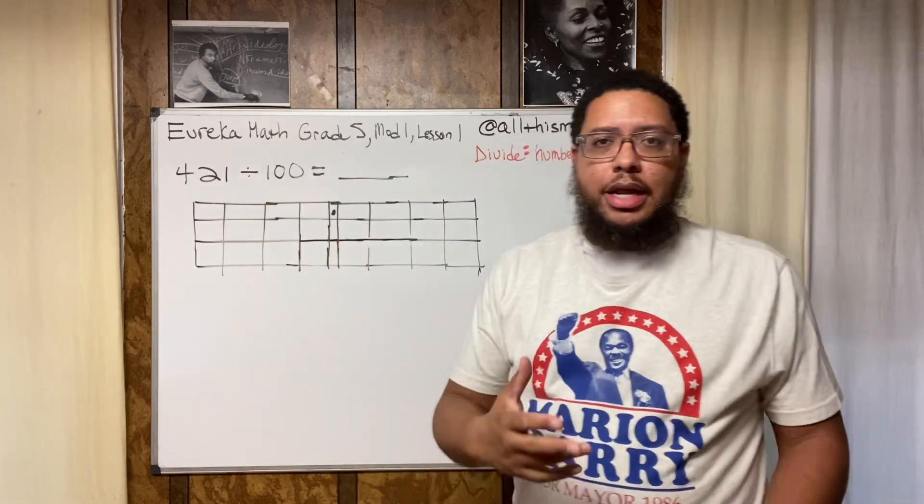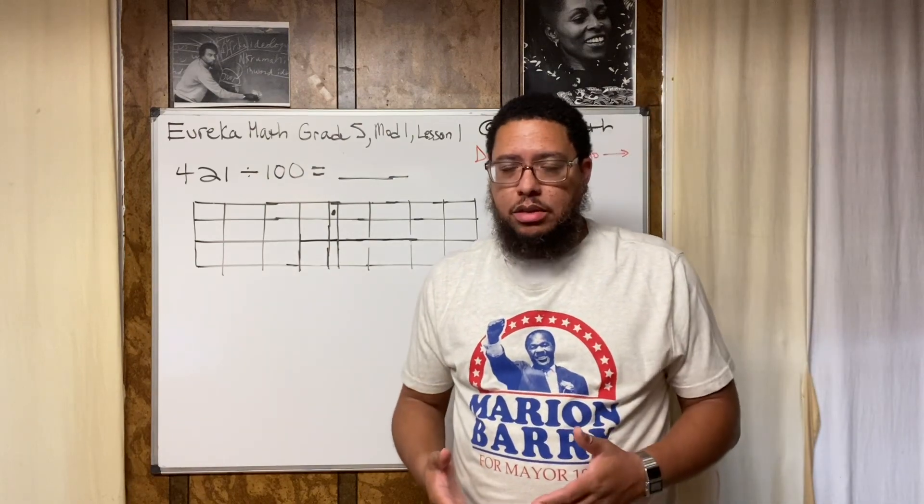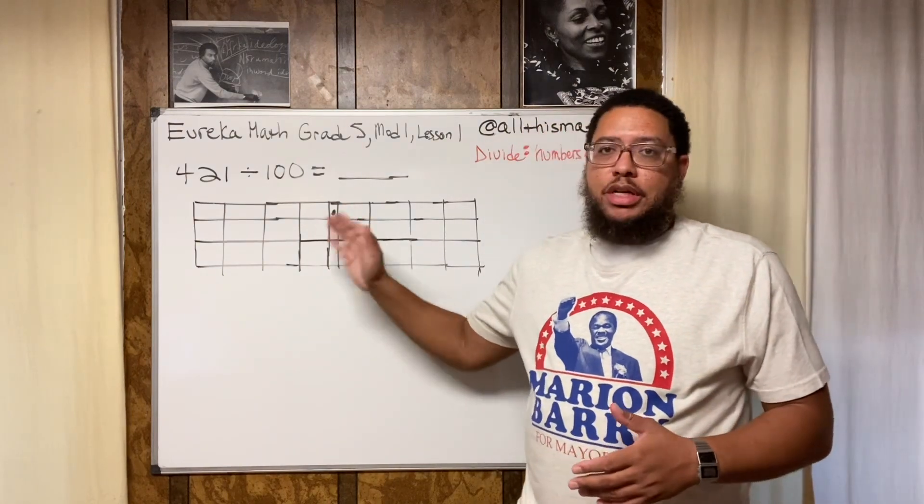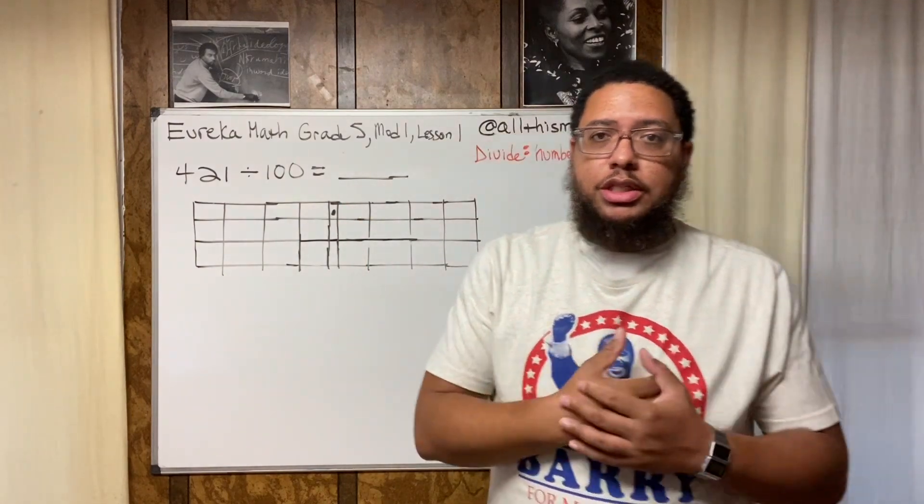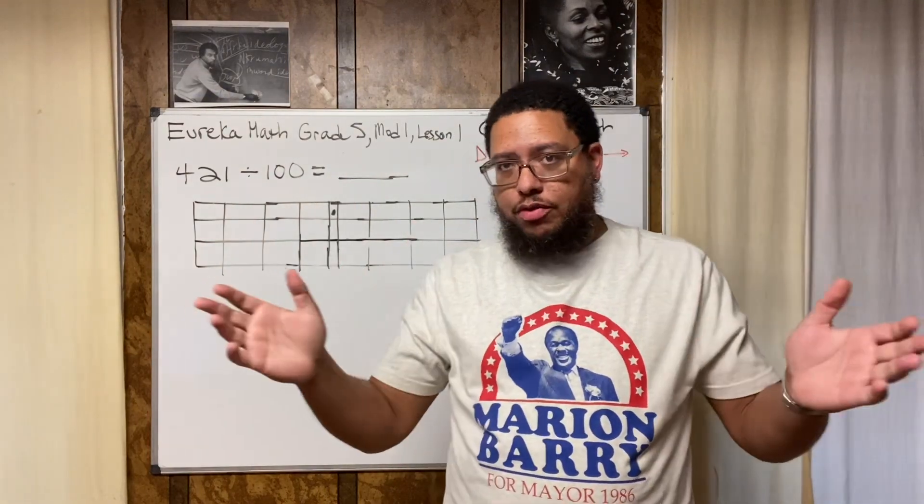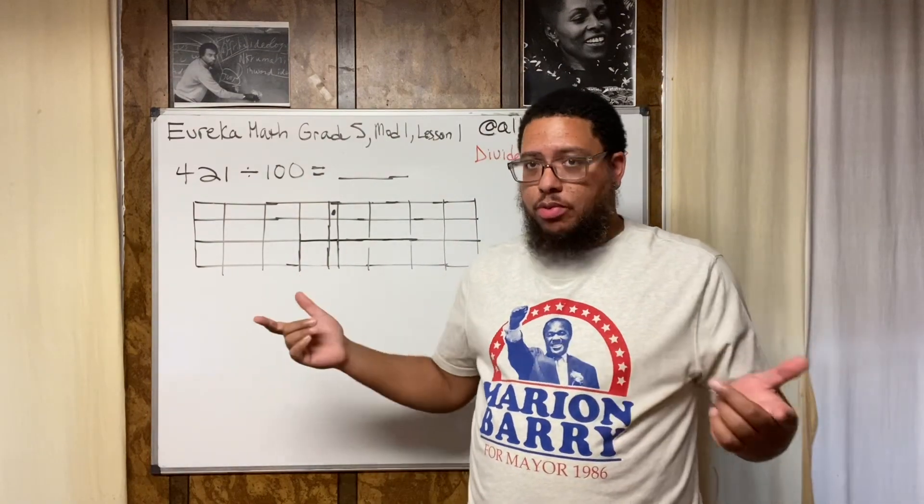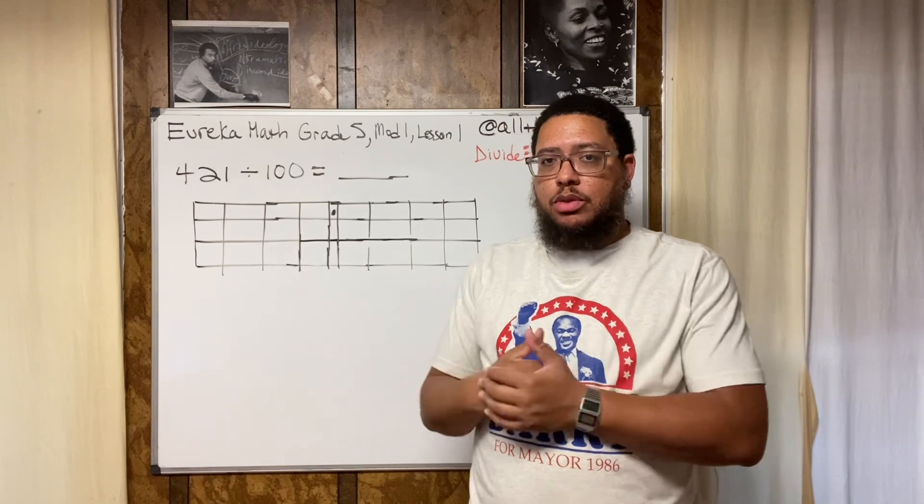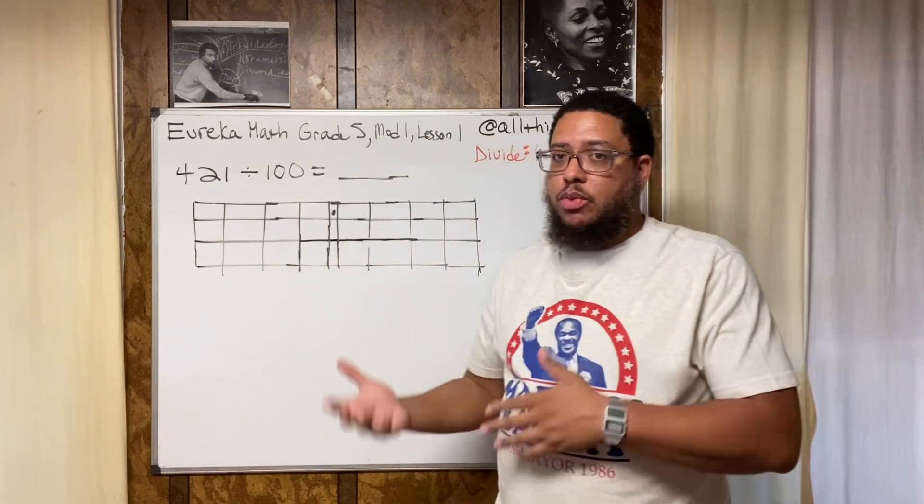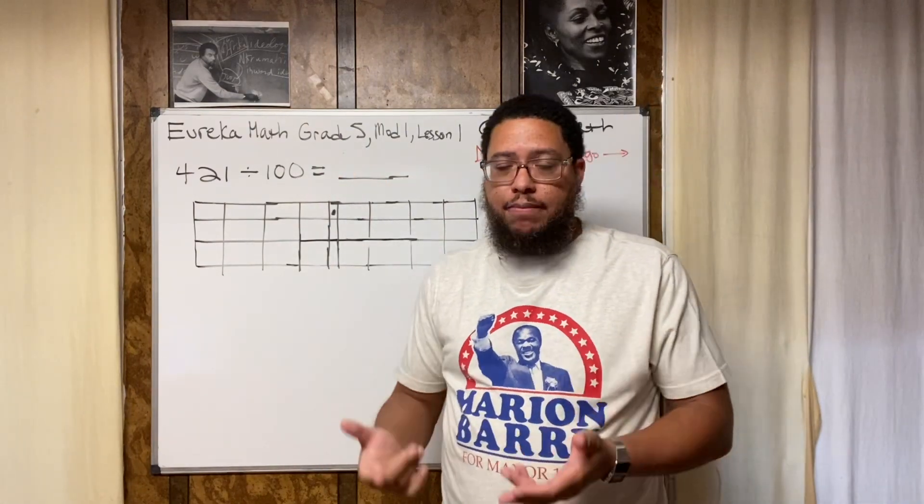I did a couple other videos on this topic and I want to reemphasize the idea that we're not moving the decimal point. I know traditionally the way I was taught back in the day, the way a lot of y'all watching this were taught, is you move the decimal point. If you divide you move the decimal point to the left, if you multiply you move the decimal point to the right. The way Eureka would like for children to do this process is to leave the decimal point where it is and instead just move the digits. You get the same result.